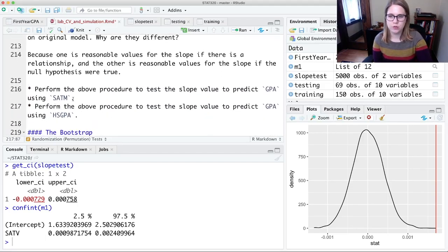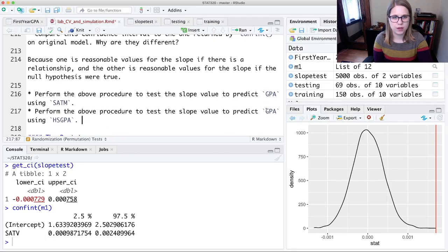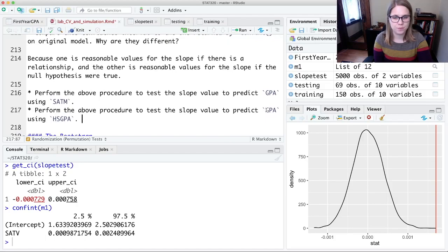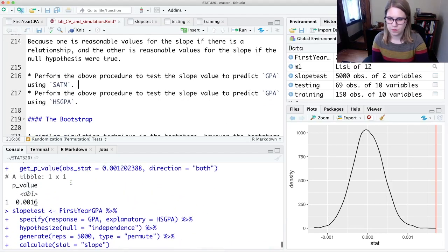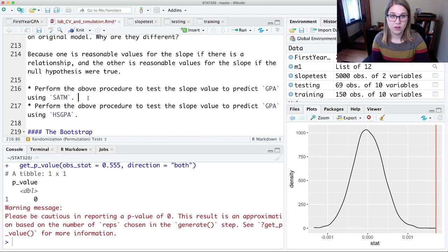And then I would encourage you to try to do the same thing. Test the slope value predicting GPA using the math score of the SAT or using the high school GPA to predict the GPA and see if you think that those slopes are different than 0. And you could pause the video and try it out, and then I'll give you the answers.